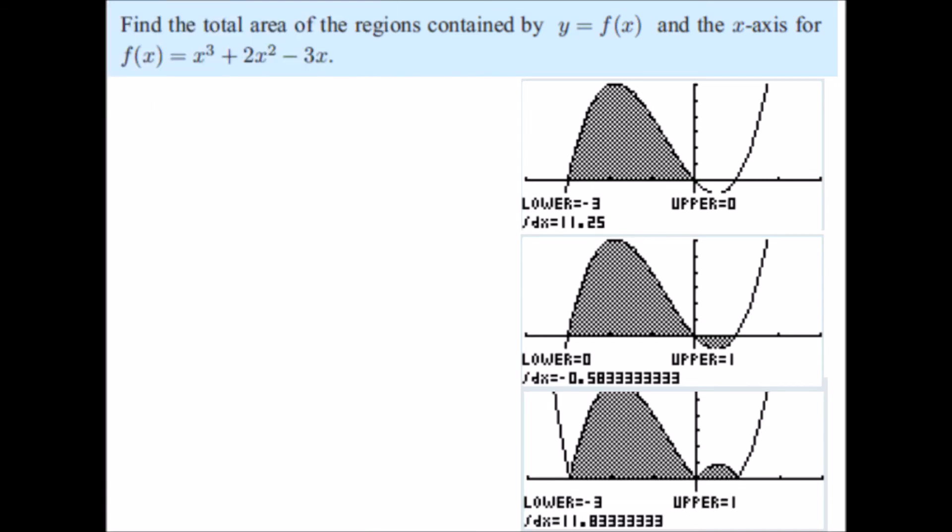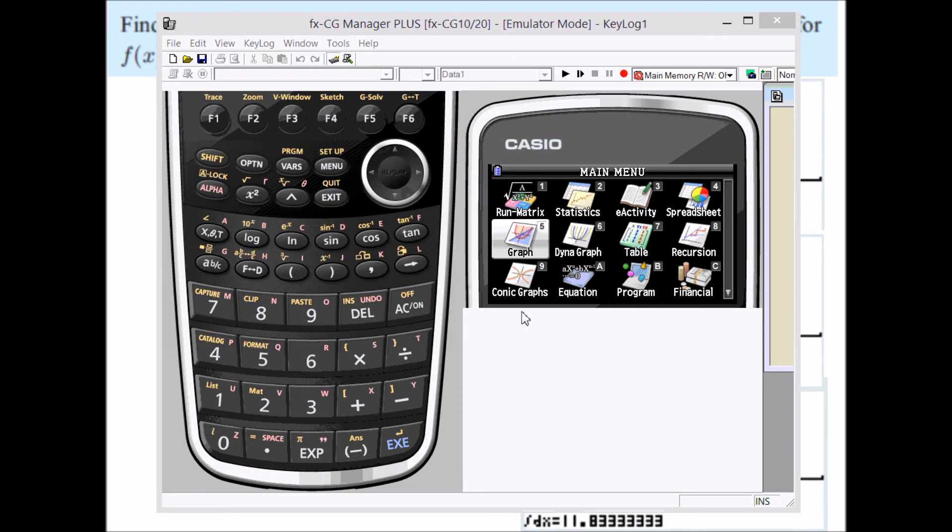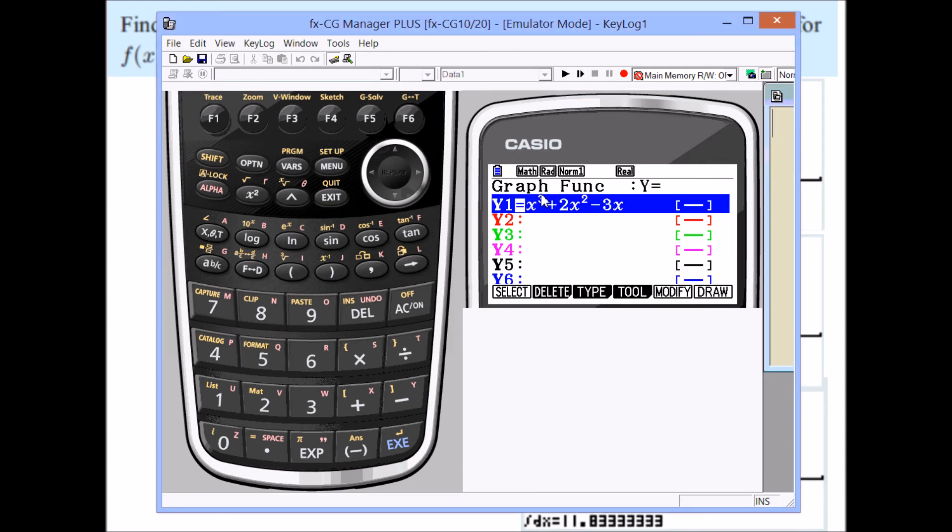Now I'll attempt to do this by using the newer Casio, the FX-G20. So here's my emulator. If I go to graph, I have my function already. If I now draw it,